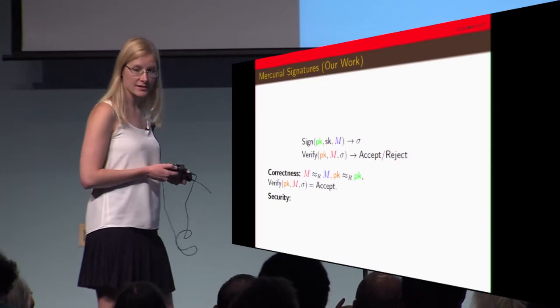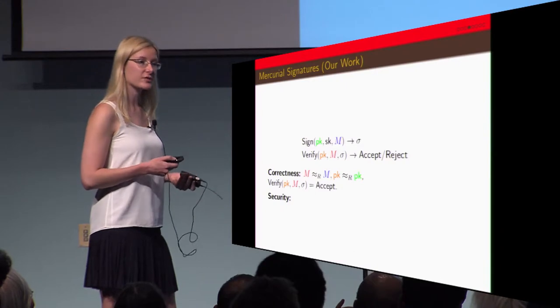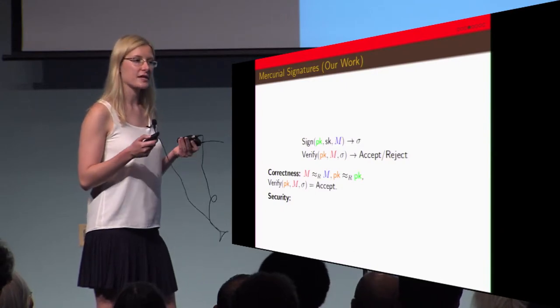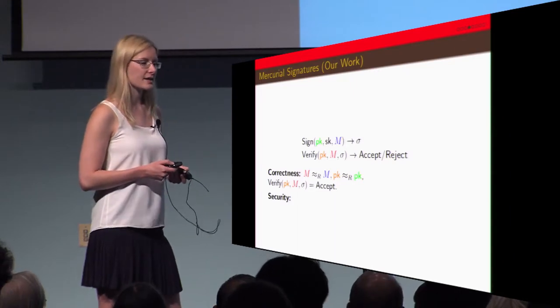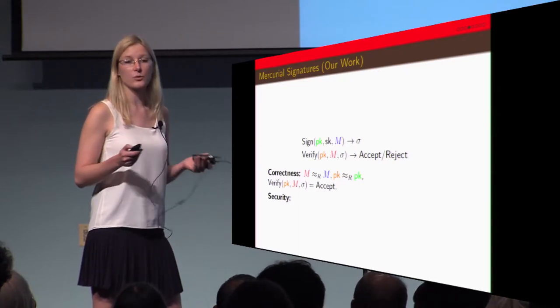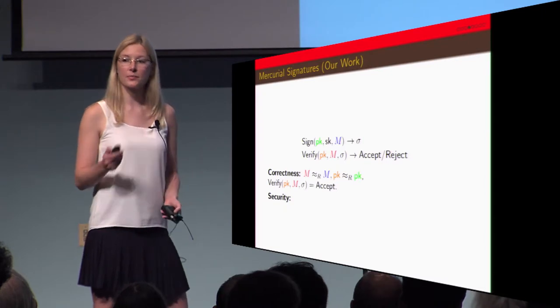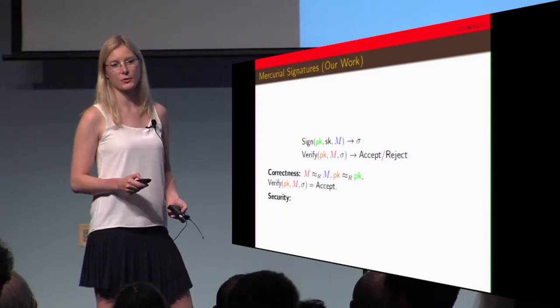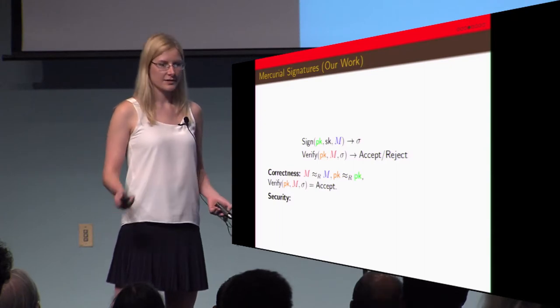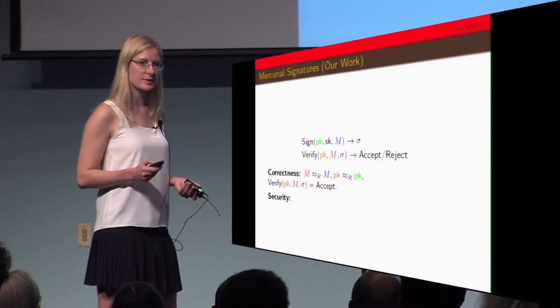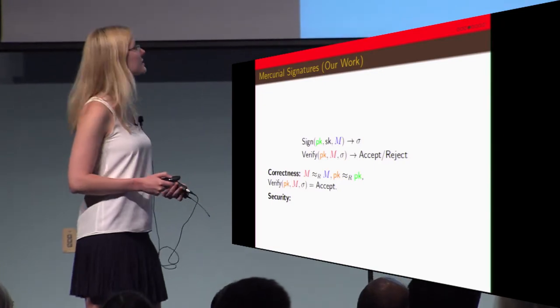It still verifies. In this case an adversary has a successful forgery if the forged message is not in any equivalence class that's already been signed. But the public key does have to be in the same equivalence class as the original public key. Otherwise it's trivial - you can come up with different public keys and messages that still verify.